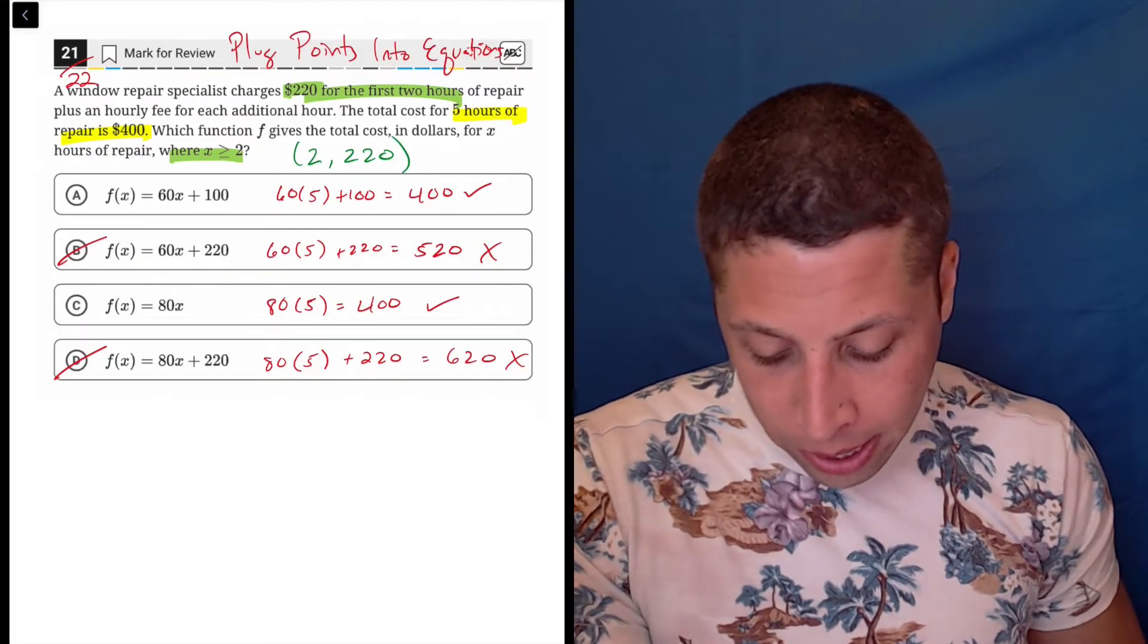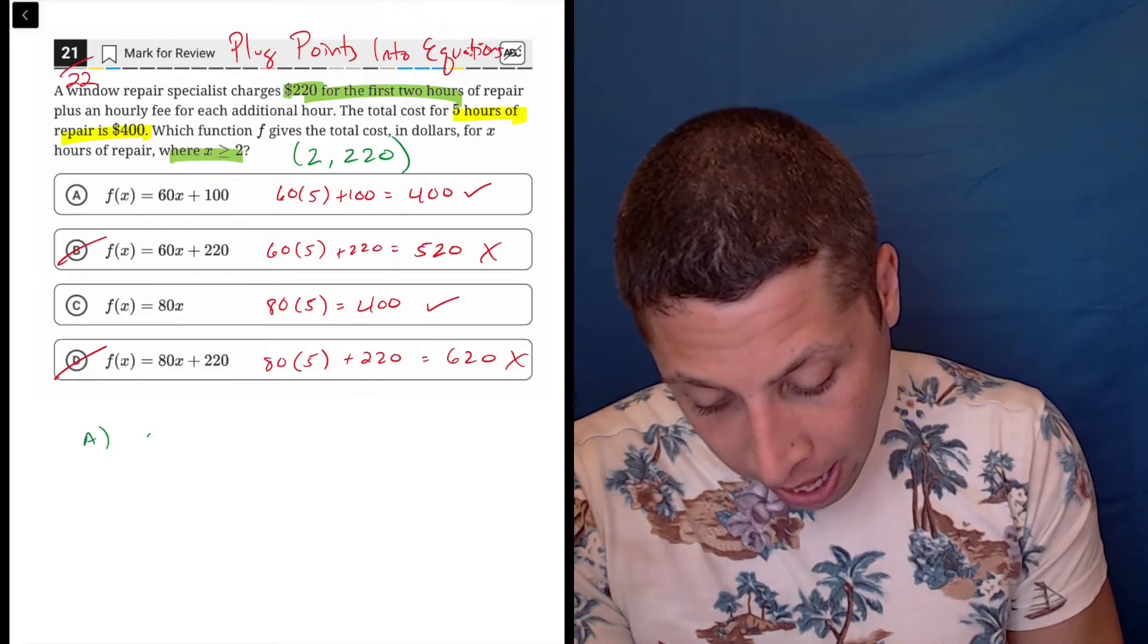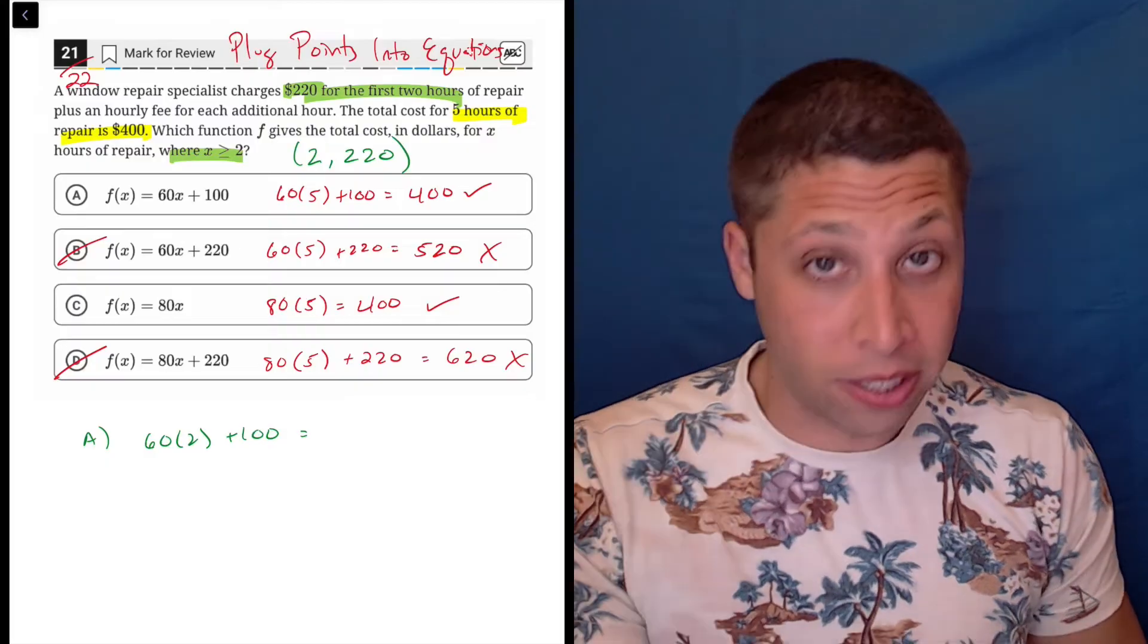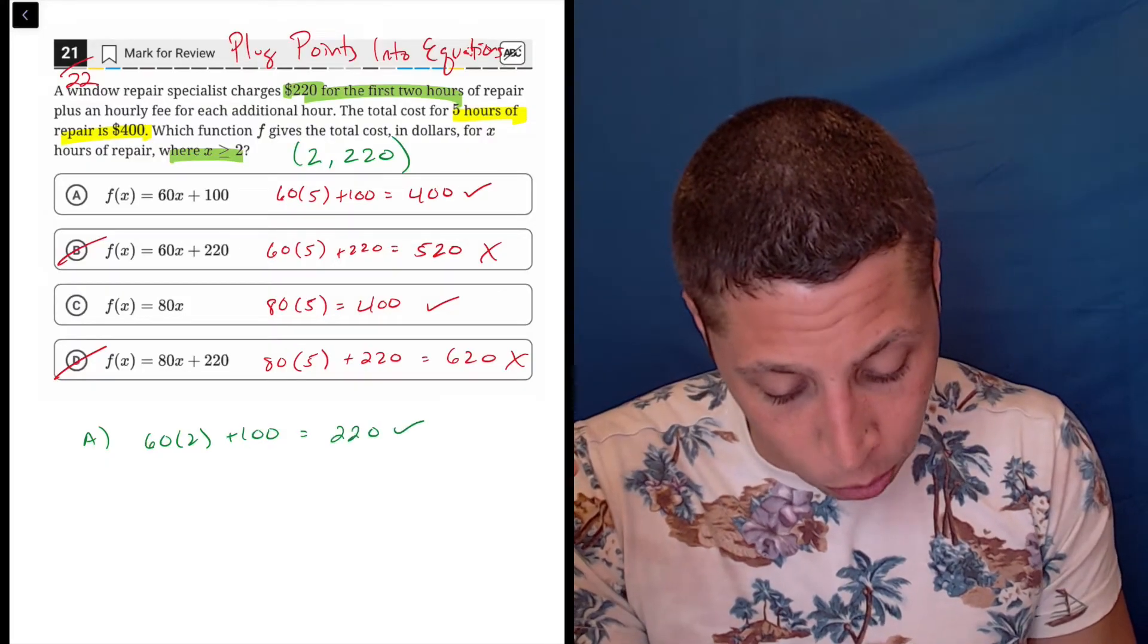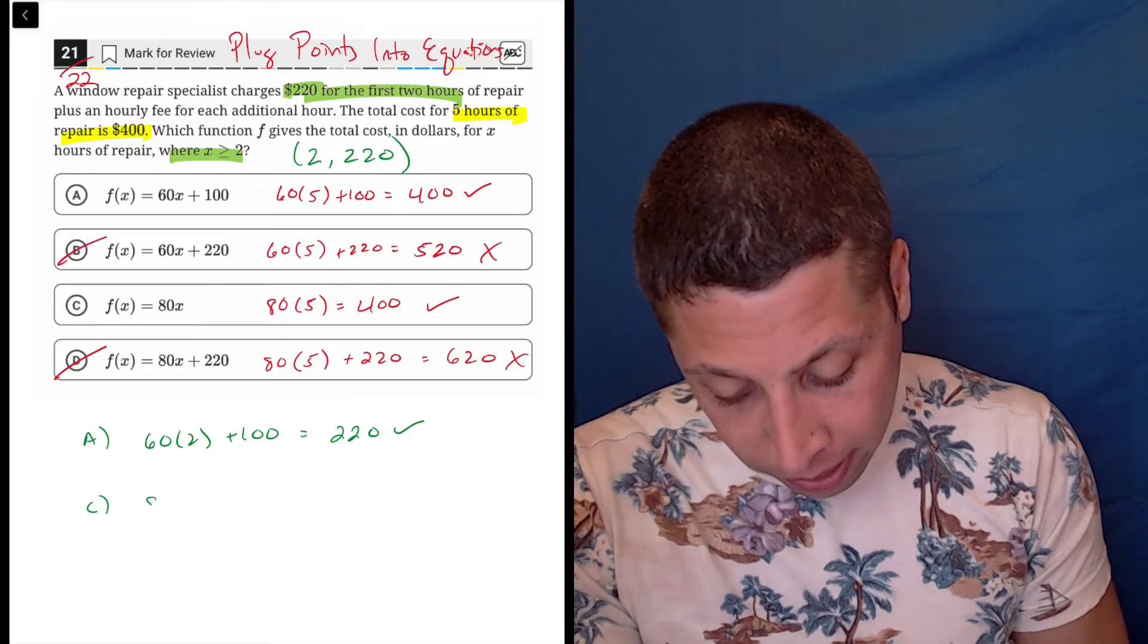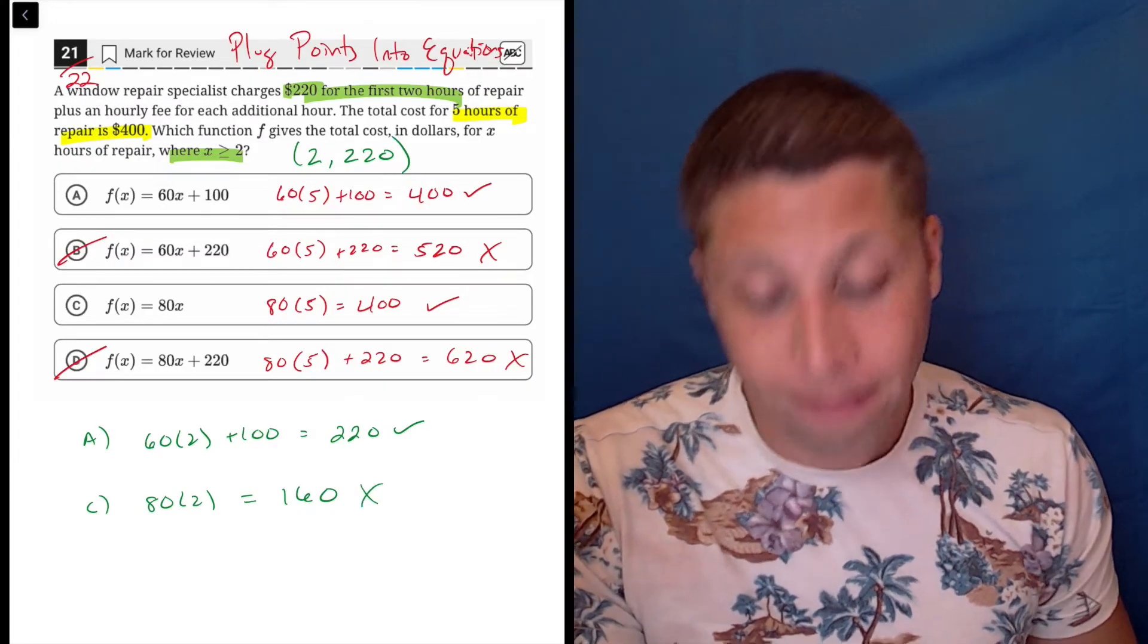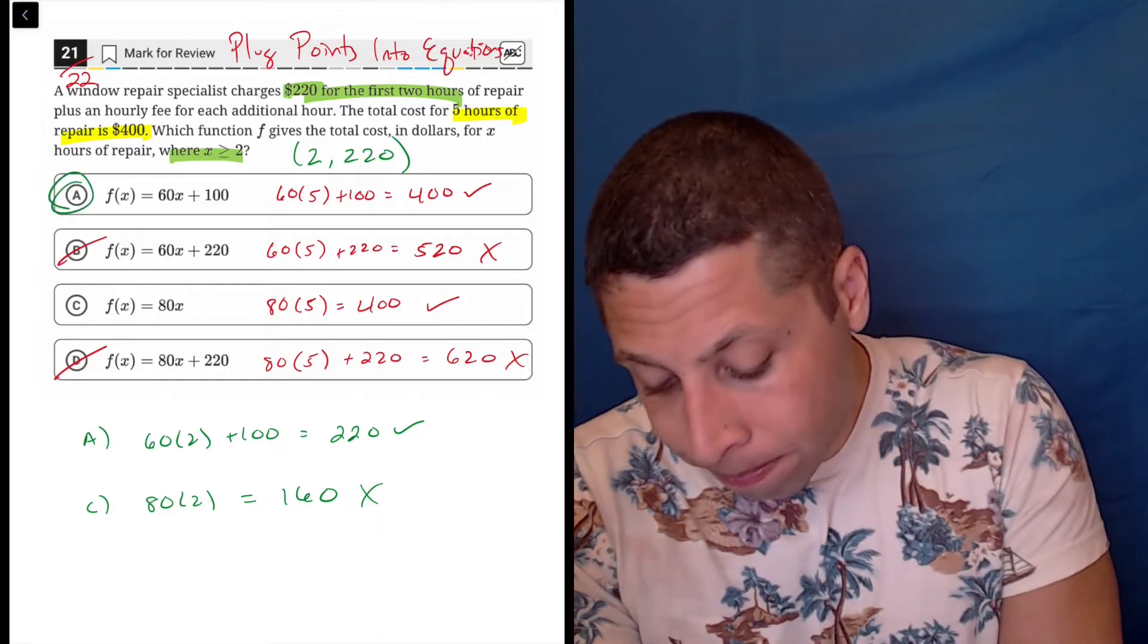So we already got rid of B and D. Let's just try A and C over again. So A would be 60 times two plus 100. Well, 60 times two is 120 plus 100 is 220. So that looks good. And then trying C, 80 times two, oh, that's 160. Not what I want. So there you go. A is the answer.